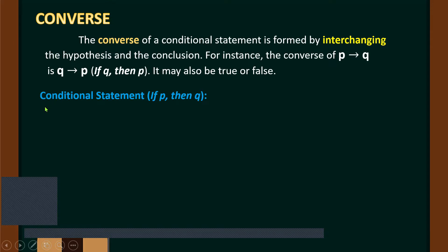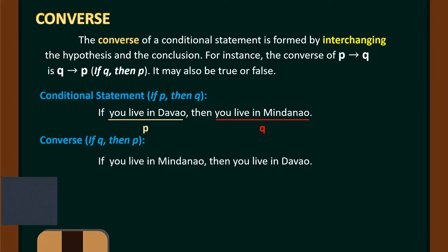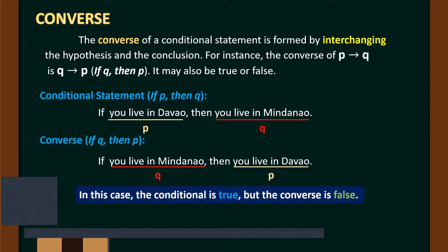For example, the conditional statement 'If P, then Q': 'If you live in Davao, then you live in Mindanao.' Here, 'you live in Davao' is our hypothesis, and 'you live in Mindanao' is our conclusion. For the converse: 'If you live in Mindanao, then you live in Davao.' In this case, the conditional is true — if you live in Davao, you are in Mindanao. But the converse is false — living in Mindanao does not mean you are from Davao, because there are many towns in Mindanao.